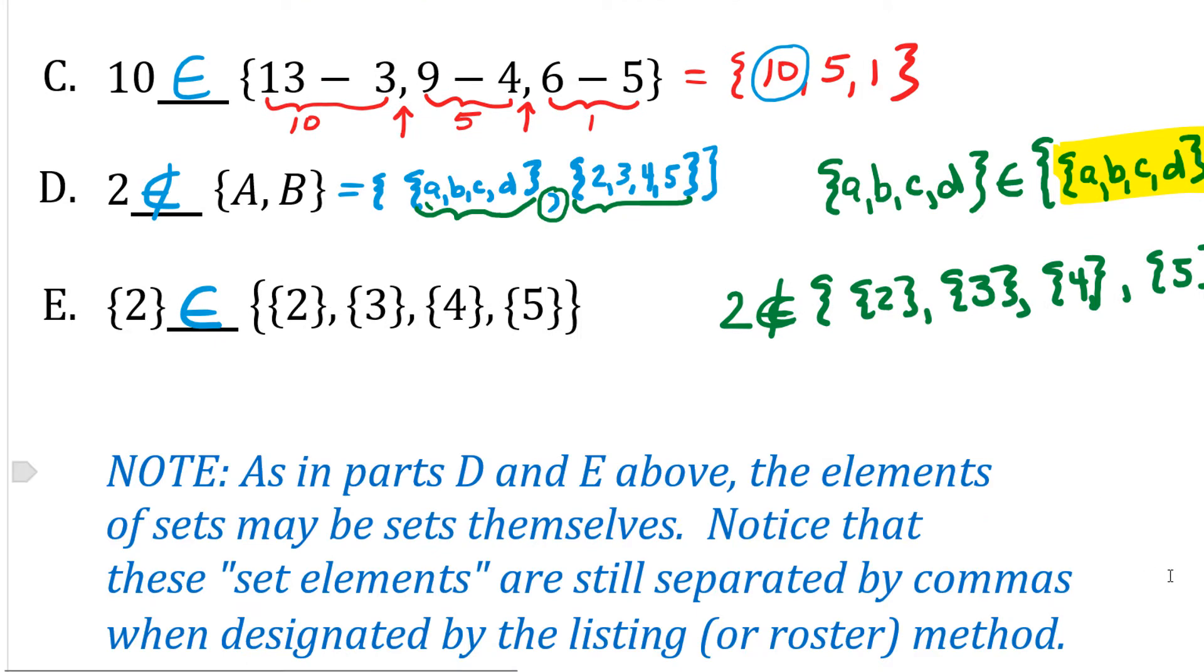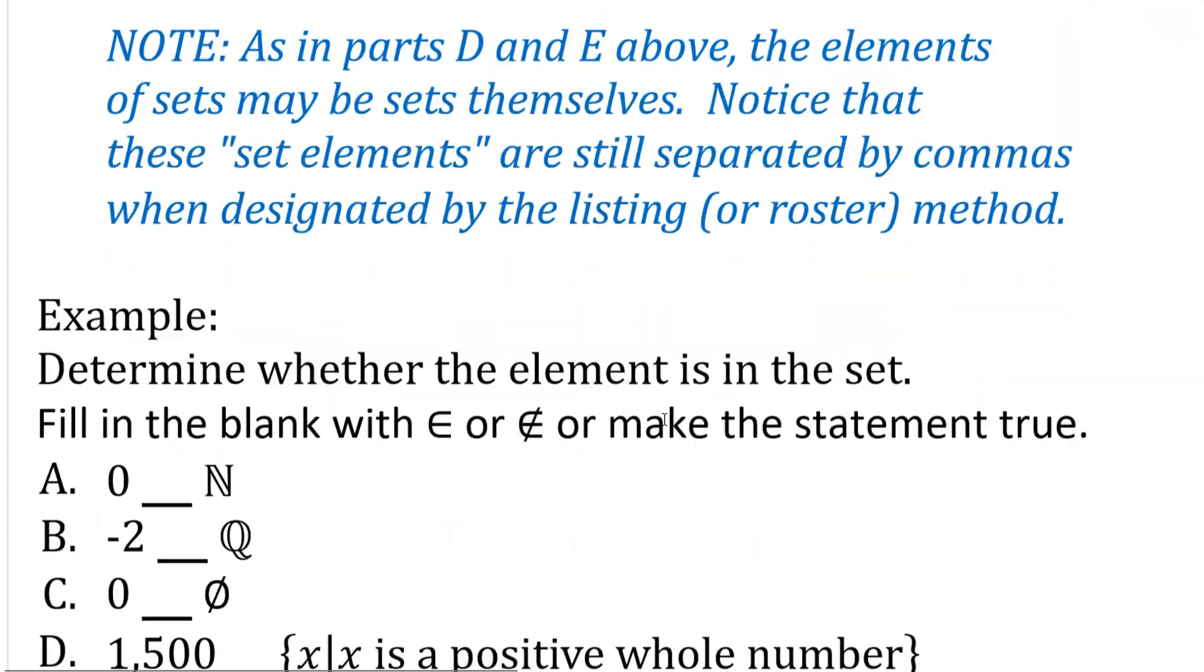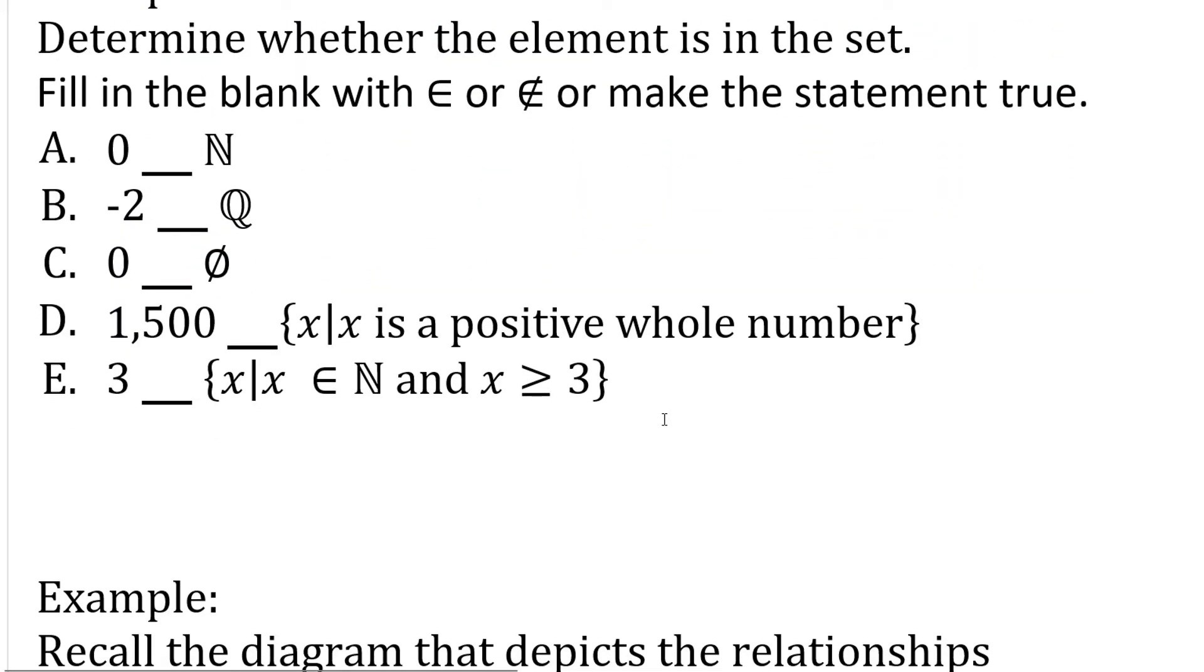So what we notice is that as in parts D and E above, the elements of sets may be sets themselves. And notice that these set elements are still separated by commas when designated by the listing or roster method. Let's look at another example. Determine whether the element is in the set. Fill in the blank with is an element of or is not an element of to make the statement true.